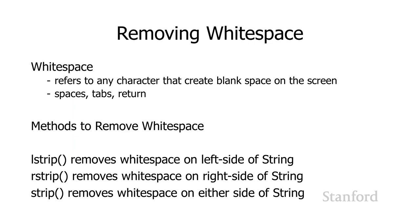Here are the ones we really need. White space refers to any character that creates blank space on the screen — spaces create blank space, tabs create blank space, and carriage returns create blank lines. There are methods that remove white space: lstrip() removes white space on the left side of the string, rstrip() removes white space on the right side of the string, and strip() removes white space on either side of the string.